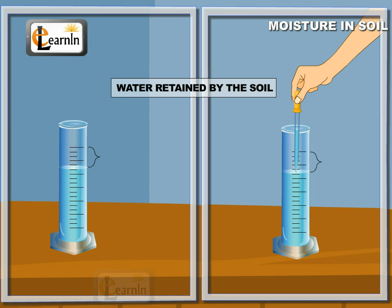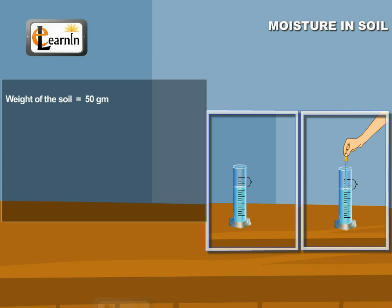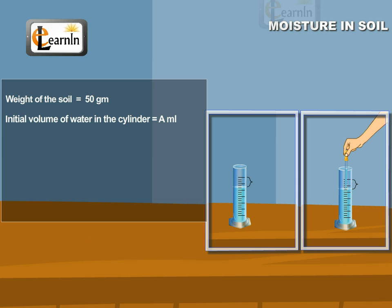Record the results as follows. Weight of the soil: 50 grams. Initial volume of water in the cylinder: a ml. Final volume of water in the cylinder: b ml.